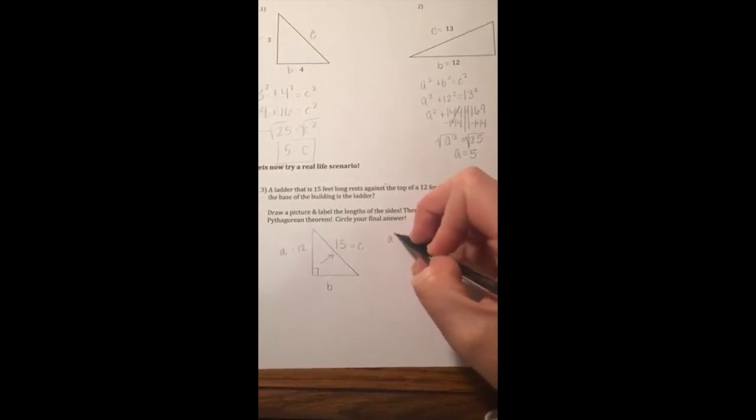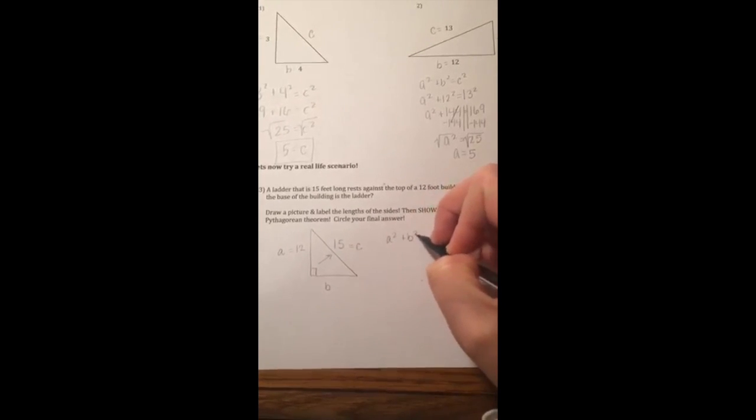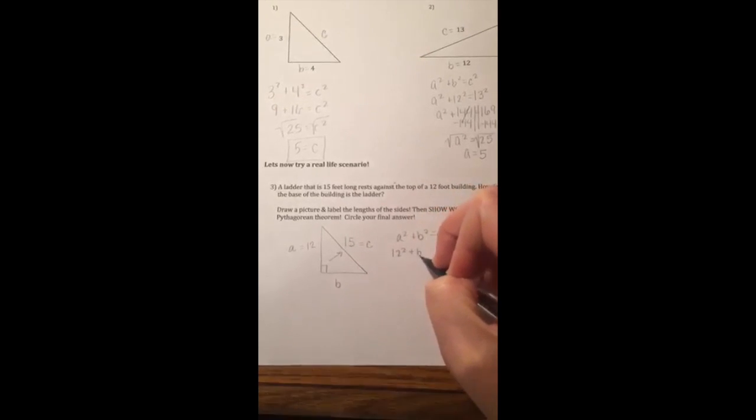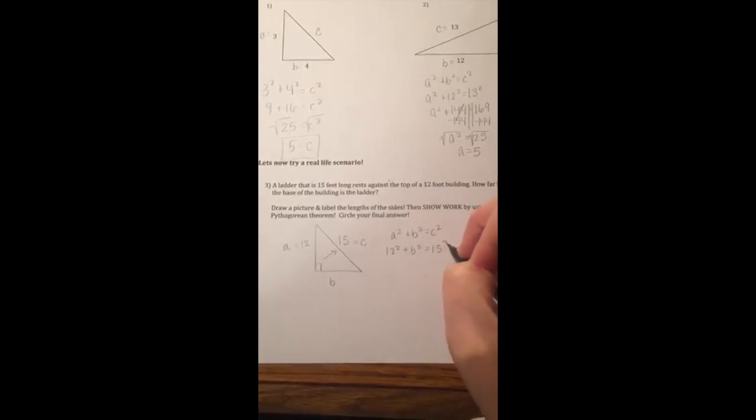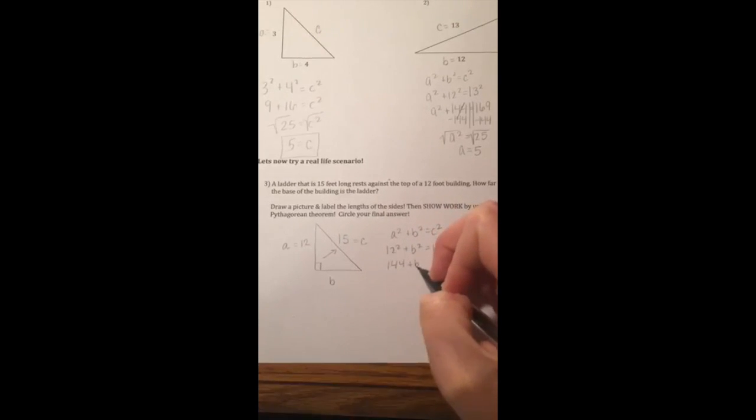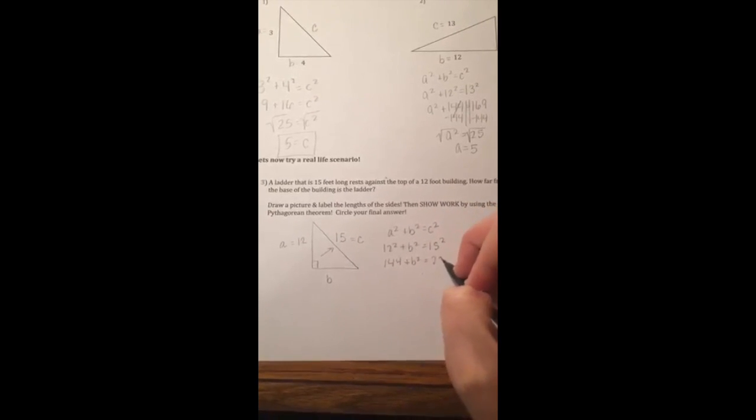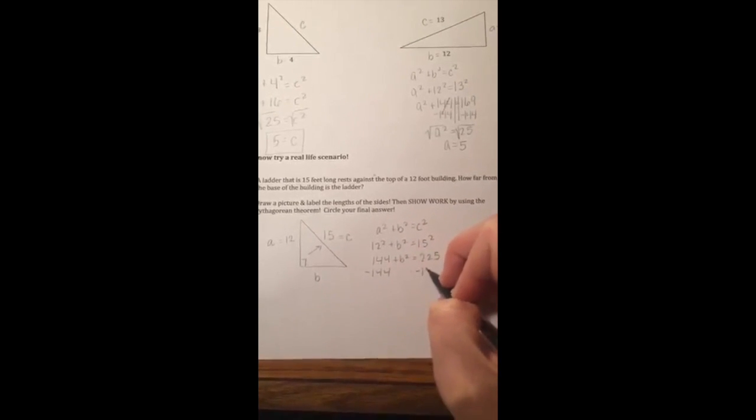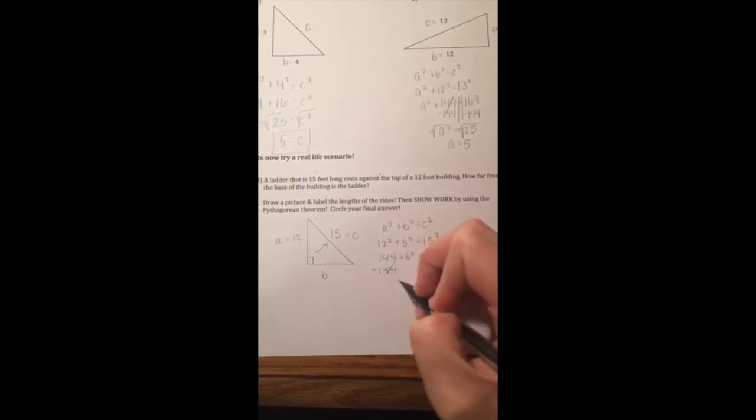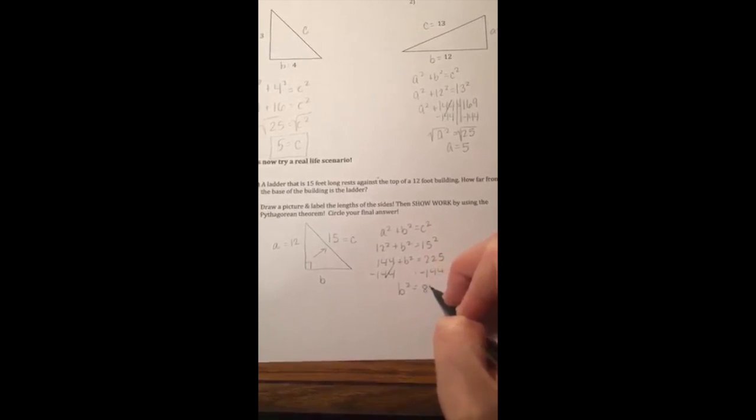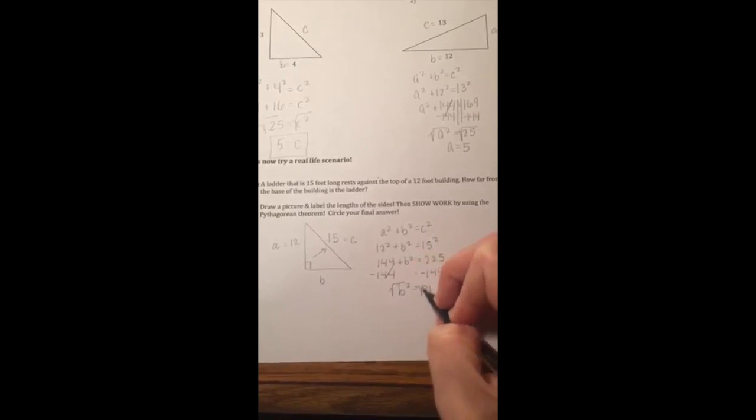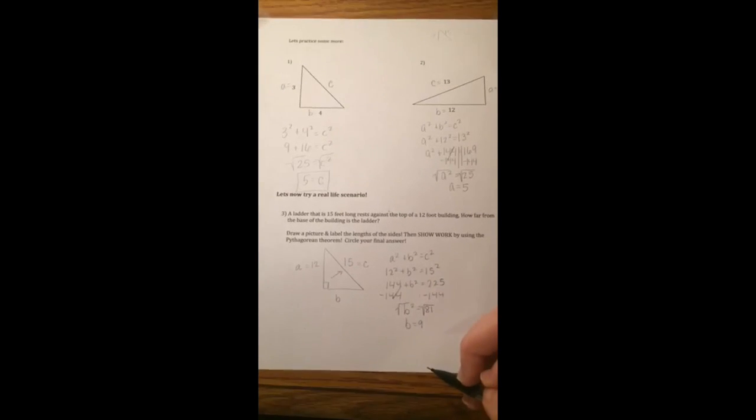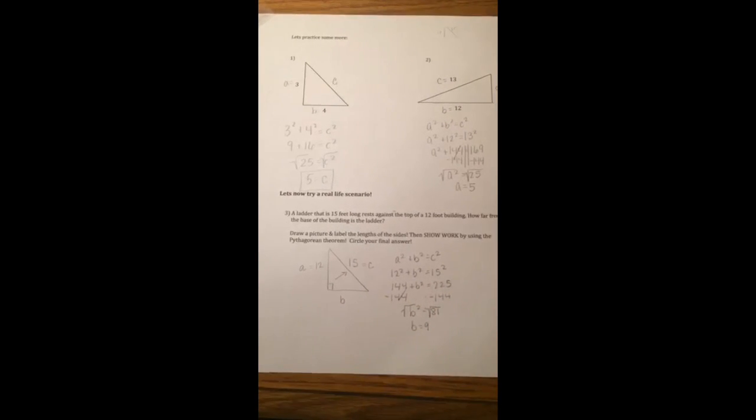So let's try to find the length of B. A squared plus B squared equals C squared. 12 squared plus B squared equals 15 squared. 144 plus B squared equals 225. Subtract 144 from both sides. B squared equals 81. The square root of 81 is 9. So the ladder is 9 feet away from the bottom of the building.